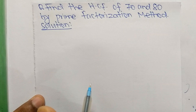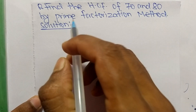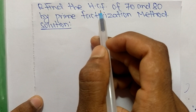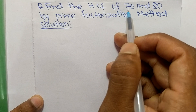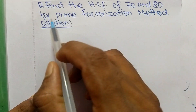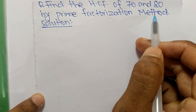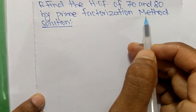Today in this video we shall learn to find the HCF of 70 and 80 by the prime factorization method.